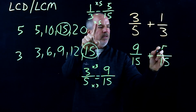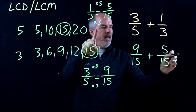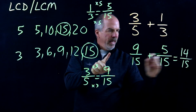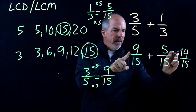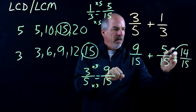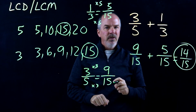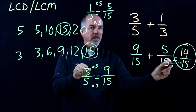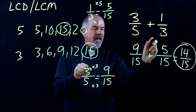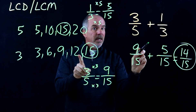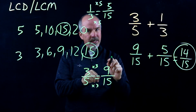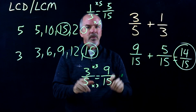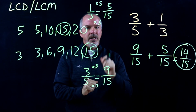9/15 plus 5/15 equals 14/15. When we add straight across, we add our numerators and the denominator stays the same. So our answer is 14/15. Now did you notice something? The least common denominator was 5 times 3. Sometimes that will be the case, not always. In this case it was the least common denominator — we multiplied the two denominators together.